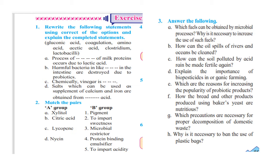Match the column. A matches with 2 — xylitol to impart sweetness. B, citric acid, matches with 5 to impart acidity. C, lycopene, matches with 1 — pigment. D, niacin, matches with 3 — microbial restrictor. That is question number 2.